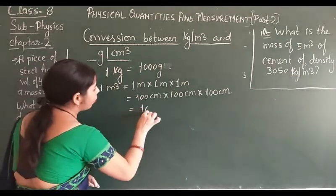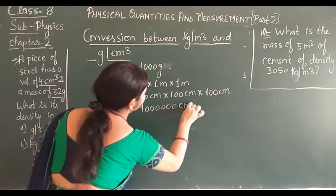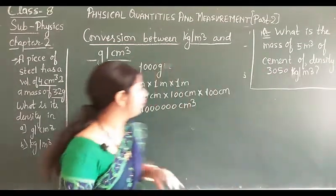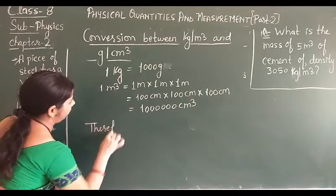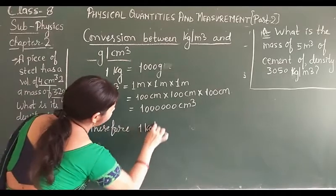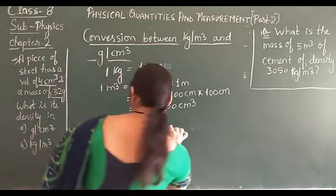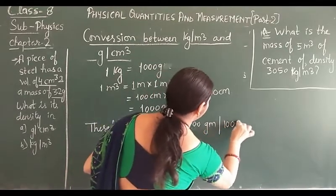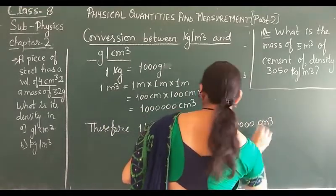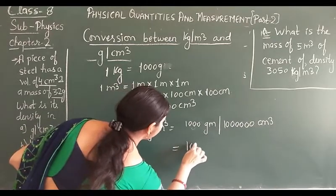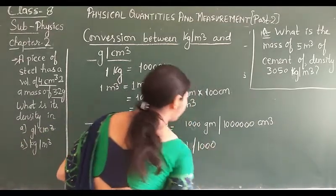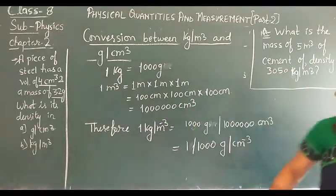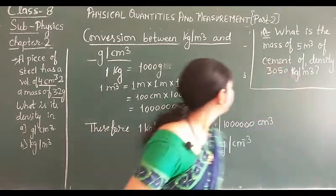Now what do we get here? Counting the zeros: 1, 2, 3, 4, 5, 6 — so 10⁶ cubic centimeters. That means 1 cubic meter is now converted into 10⁶ cubic centimeters. Therefore, 1 kilogram per cubic meter equals 1000 grams divided by 10⁶ cubic centimeters, which gives us 1/1000 gram per cubic centimeter.